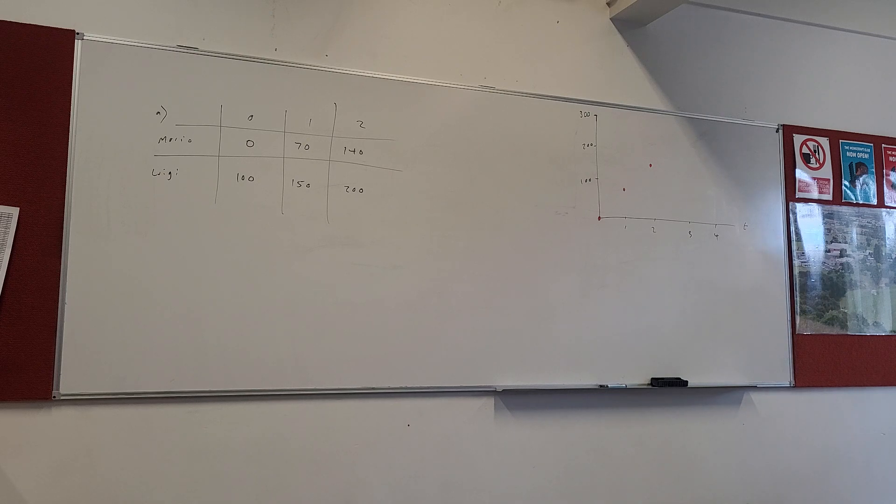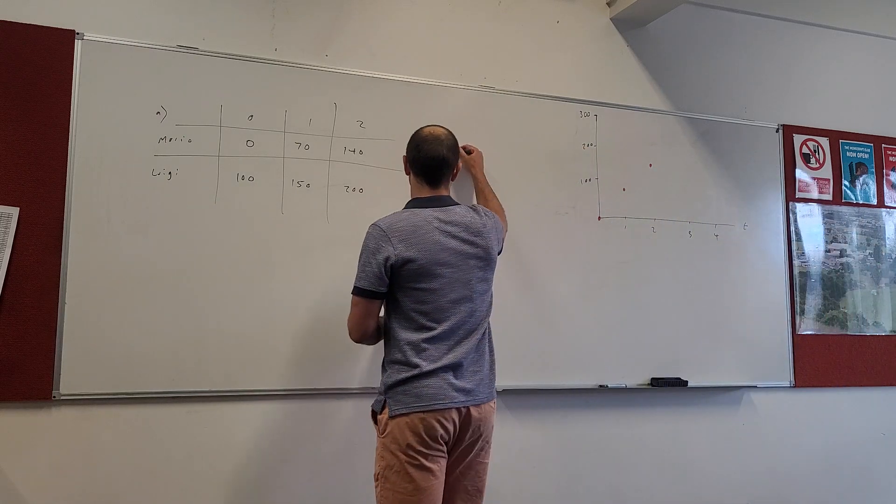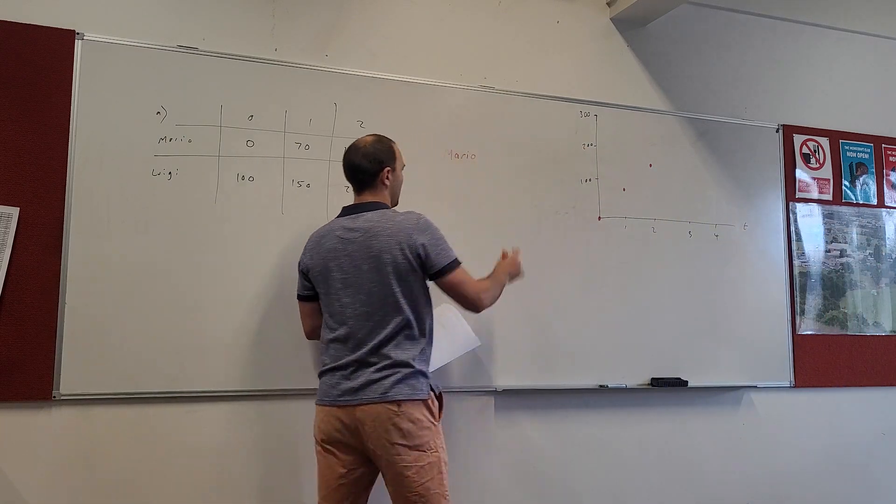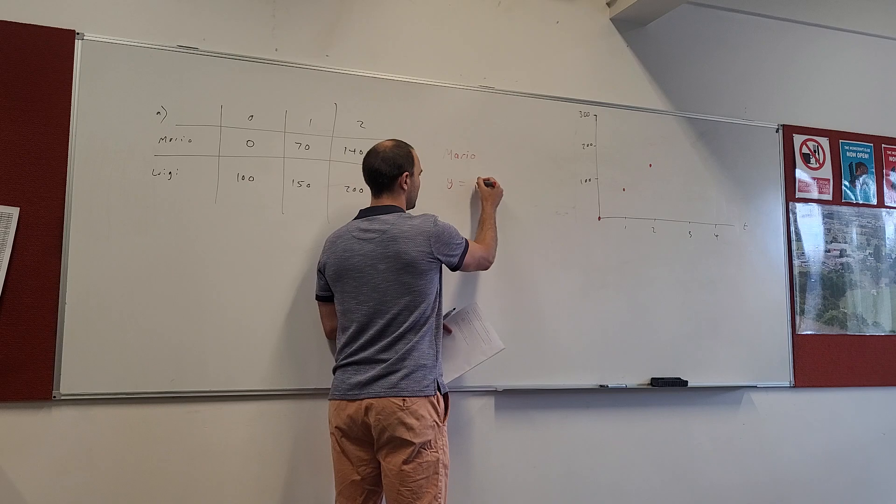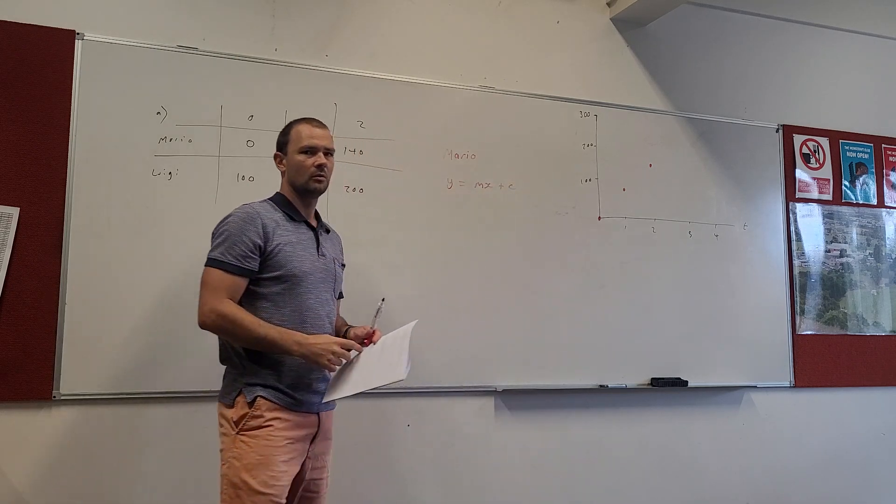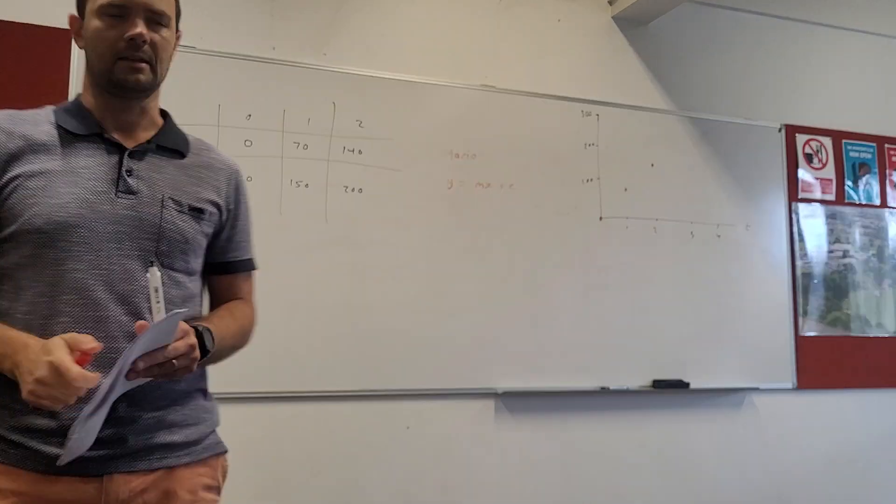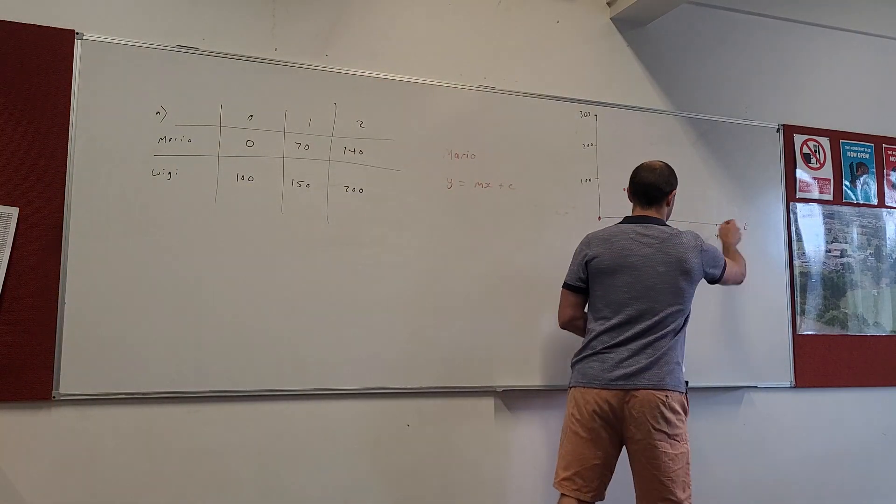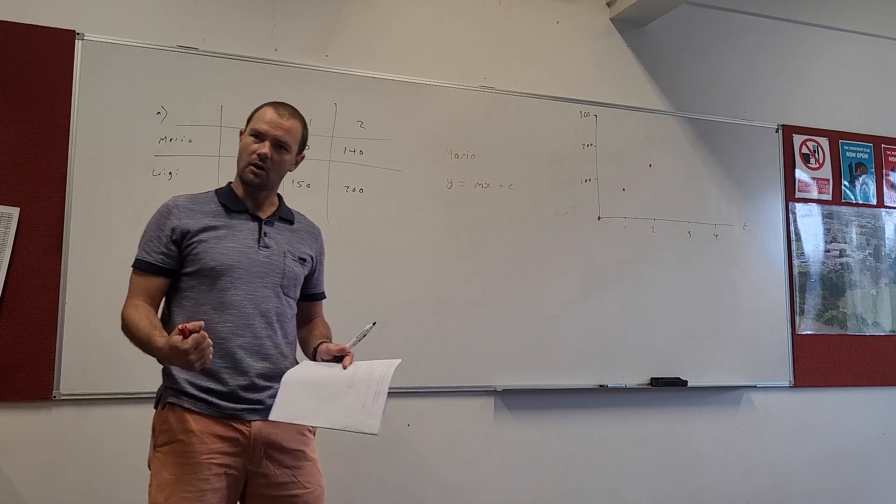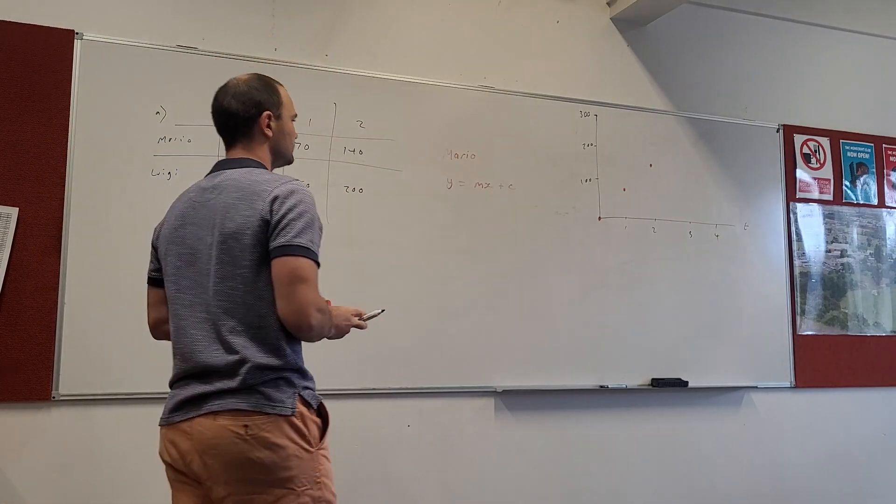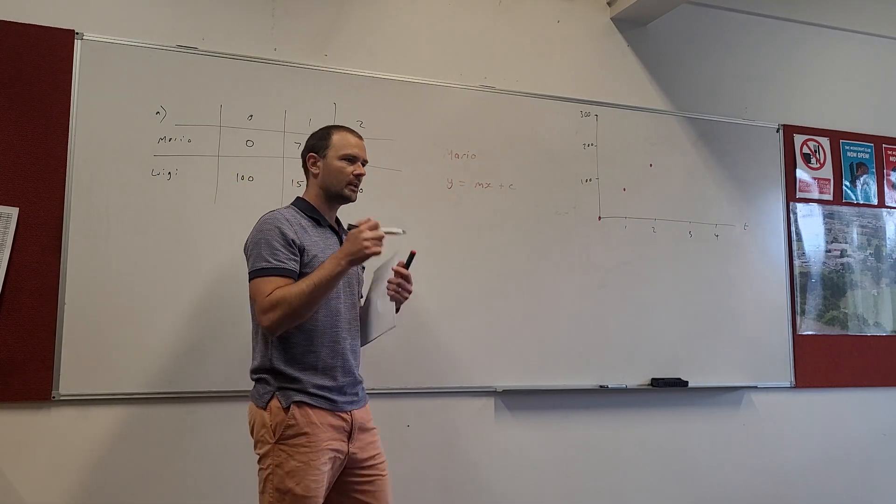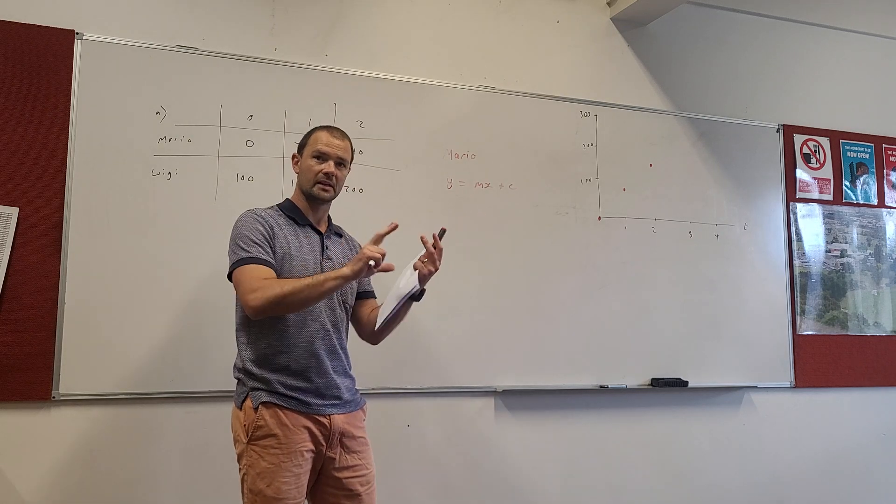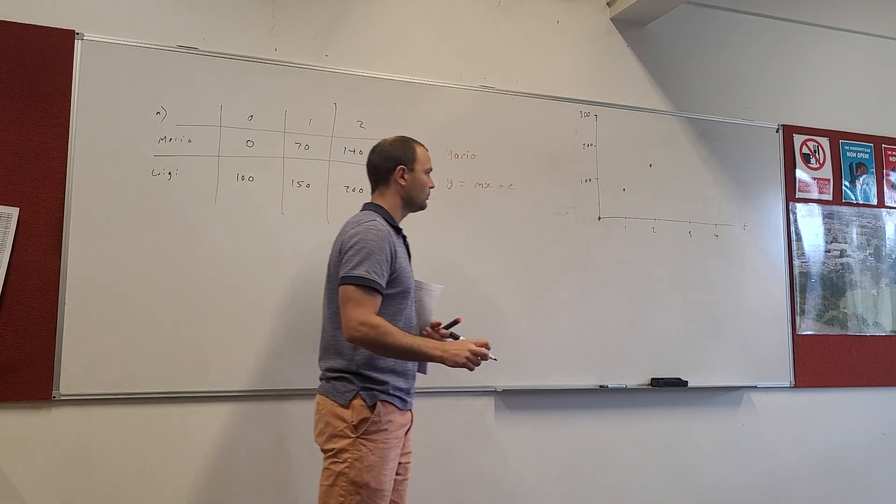So, before we jump to Luigi and plot Luigi, let's just focus on Mario. The equation of the line for Mario. Now, it's a line. Which means it has the equation y equals mx plus c. Y equals mx plus c. This is our x-axis. This is our y-axis. Okay? On the x-axis, we've got time. On the y-axis, we've got dollars. So, we need the slope. And we need the y-intercept. And if we have those two things, we've got the equation of the line. So, there's quite a few ways we can figure it out.